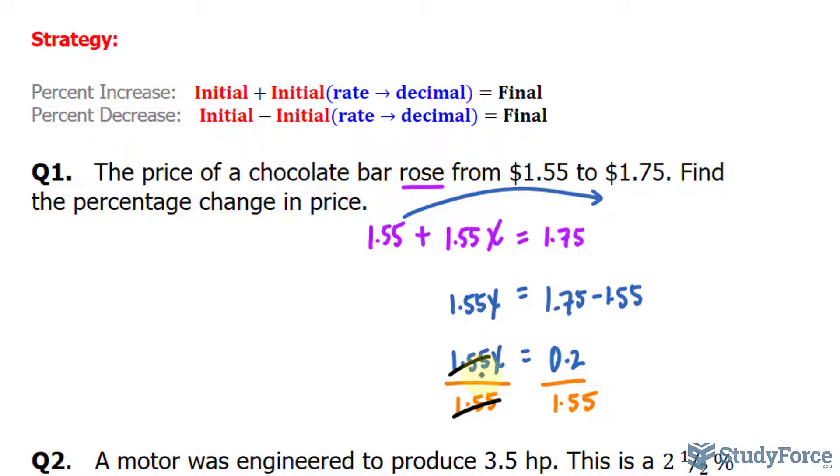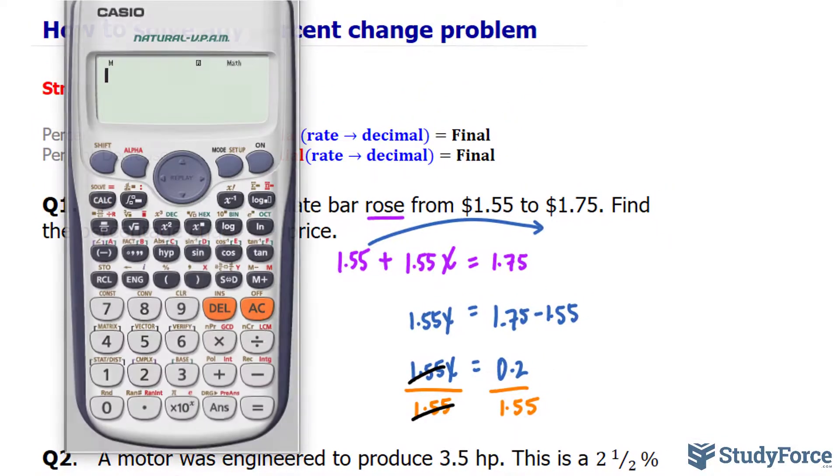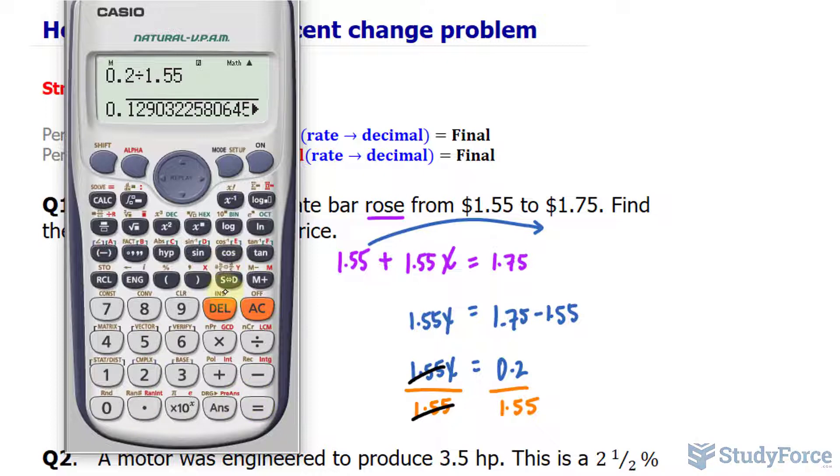The reason why we divide both sides by 1.55 is because it then eliminates these two numbers, leaving us with simply x on the left side. Now, using your calculator, you'll take 0.2 and divide it by 1.55. But since we want it as a percentage, we then multiply this amount by 100.